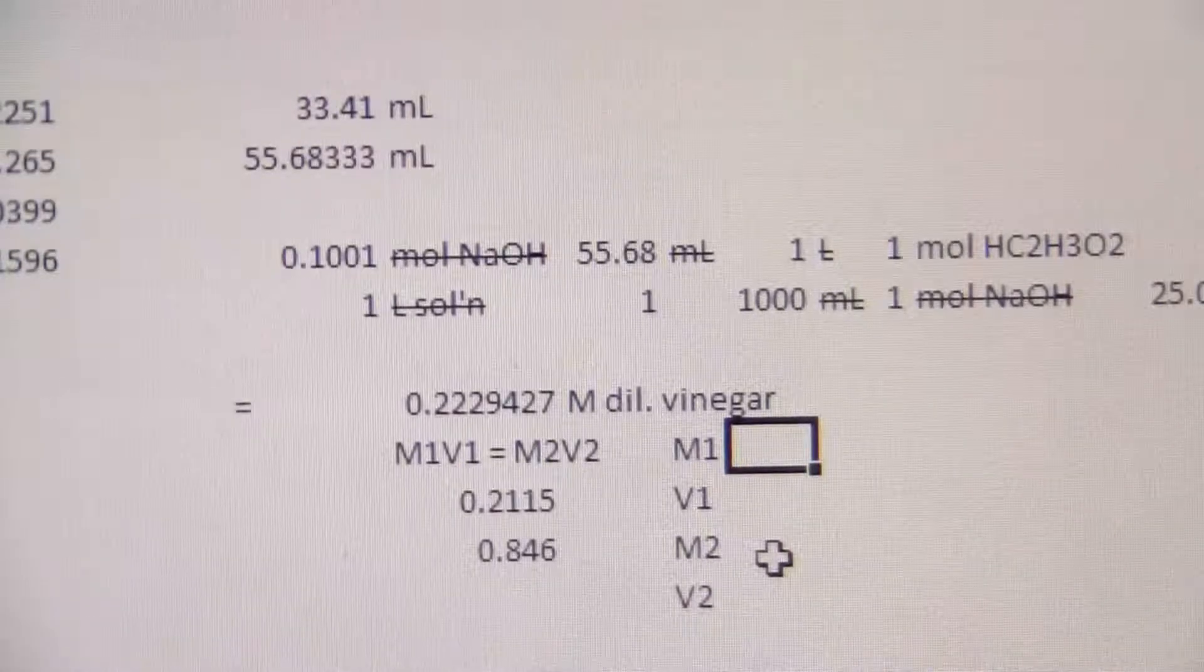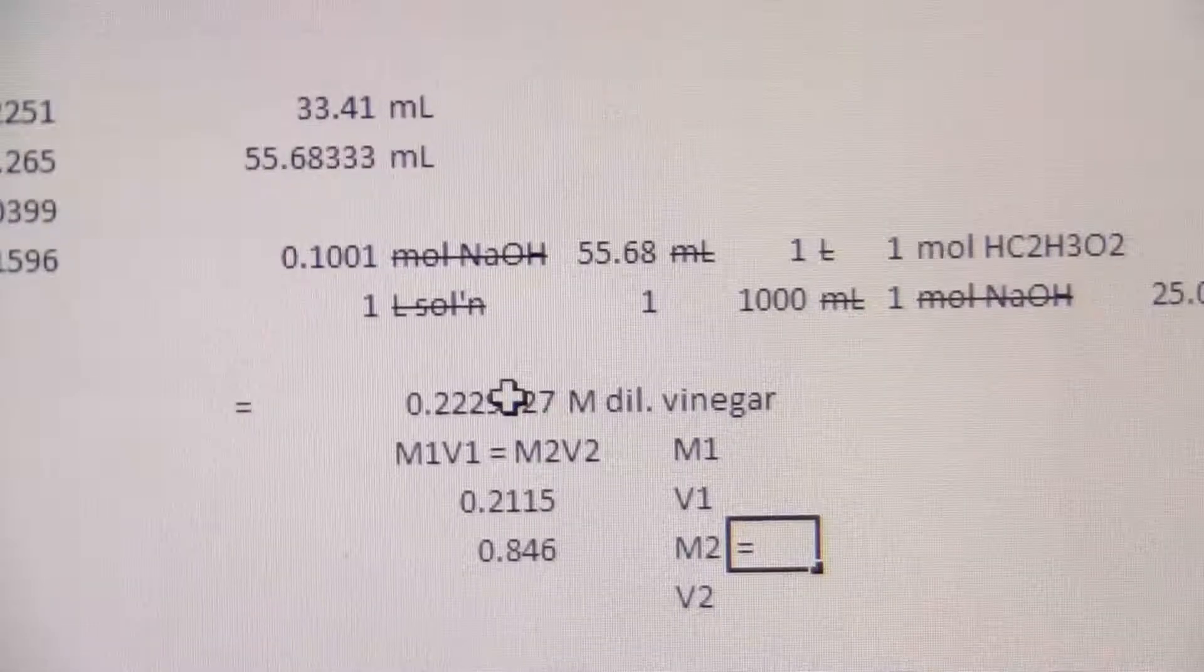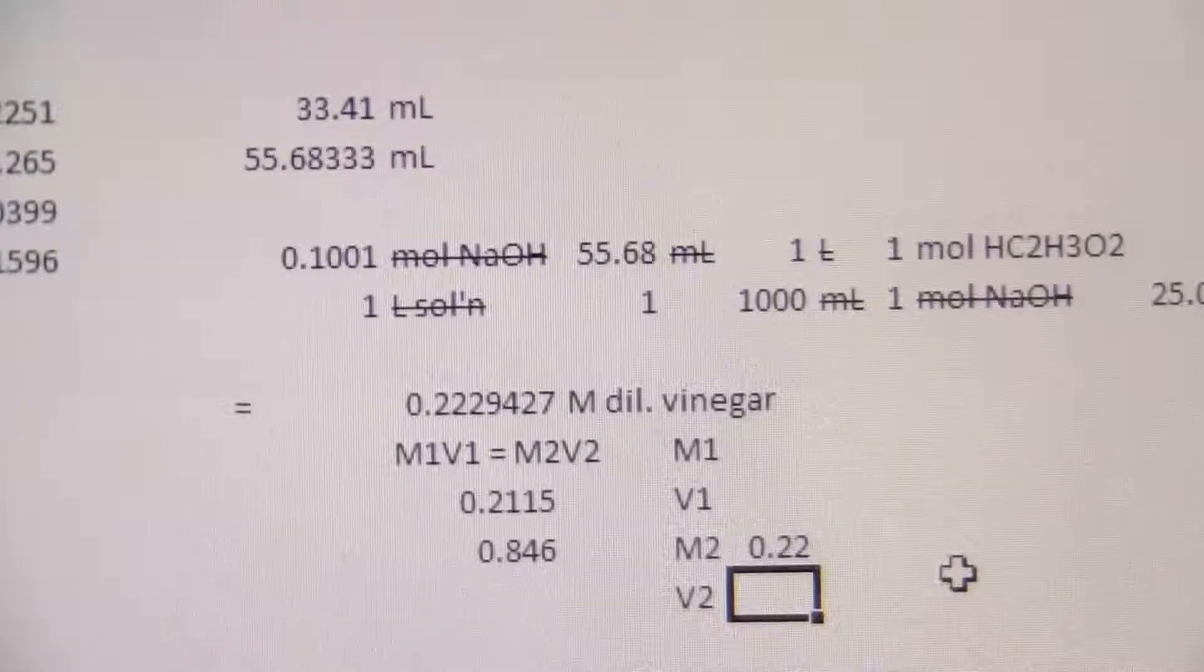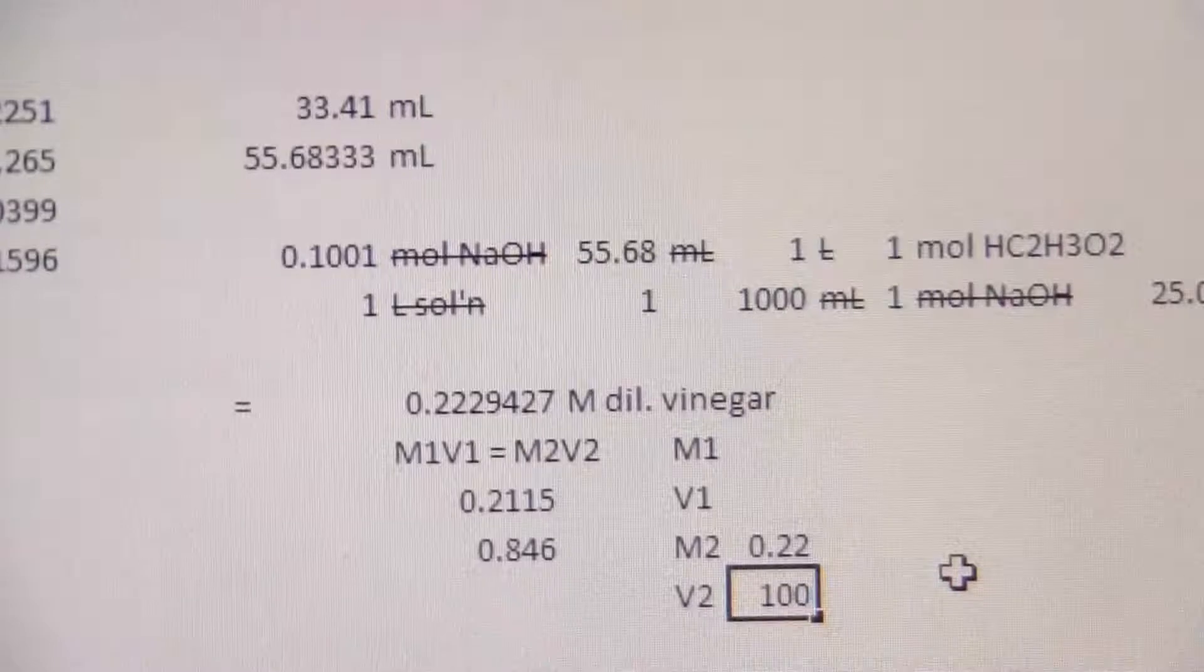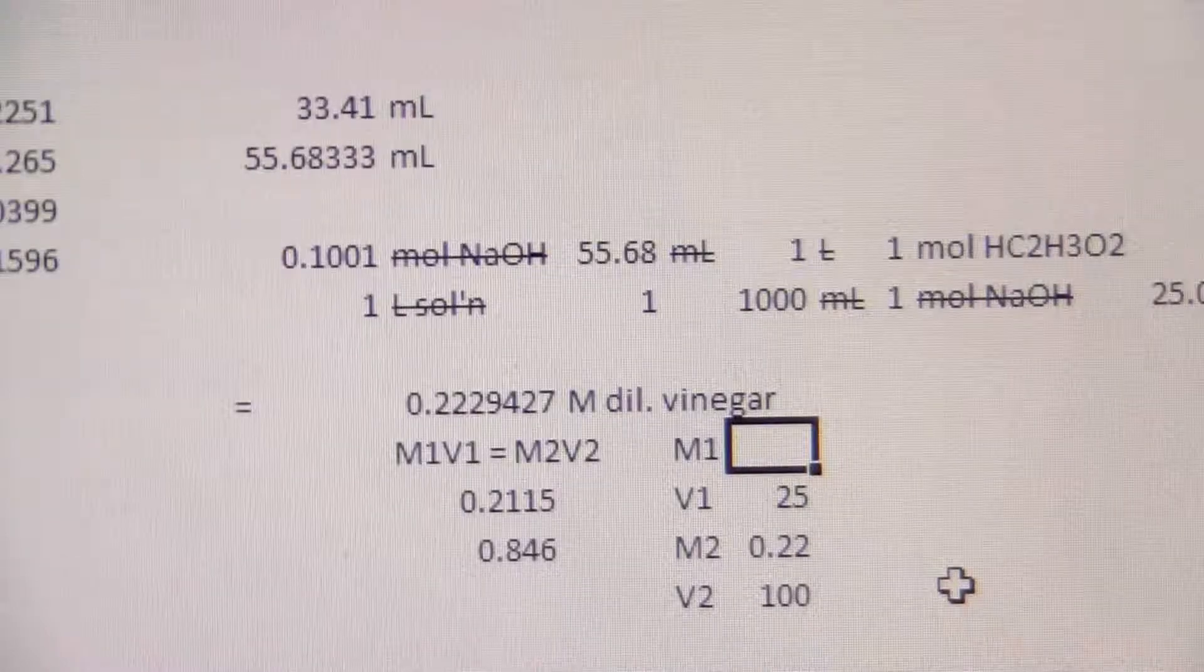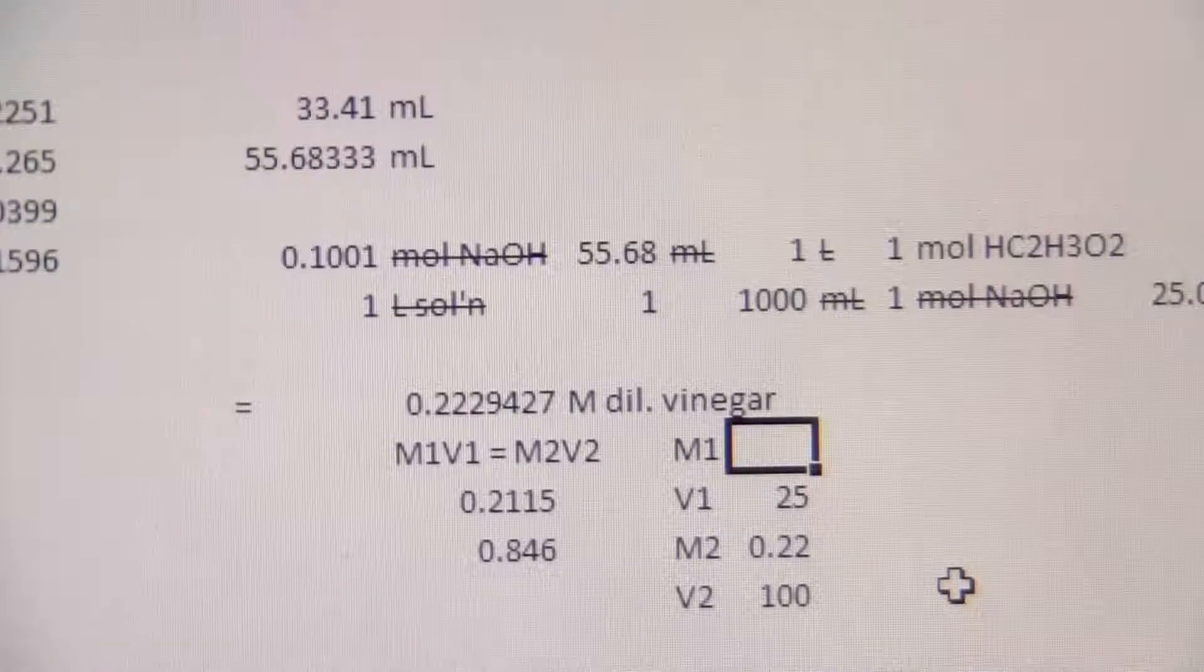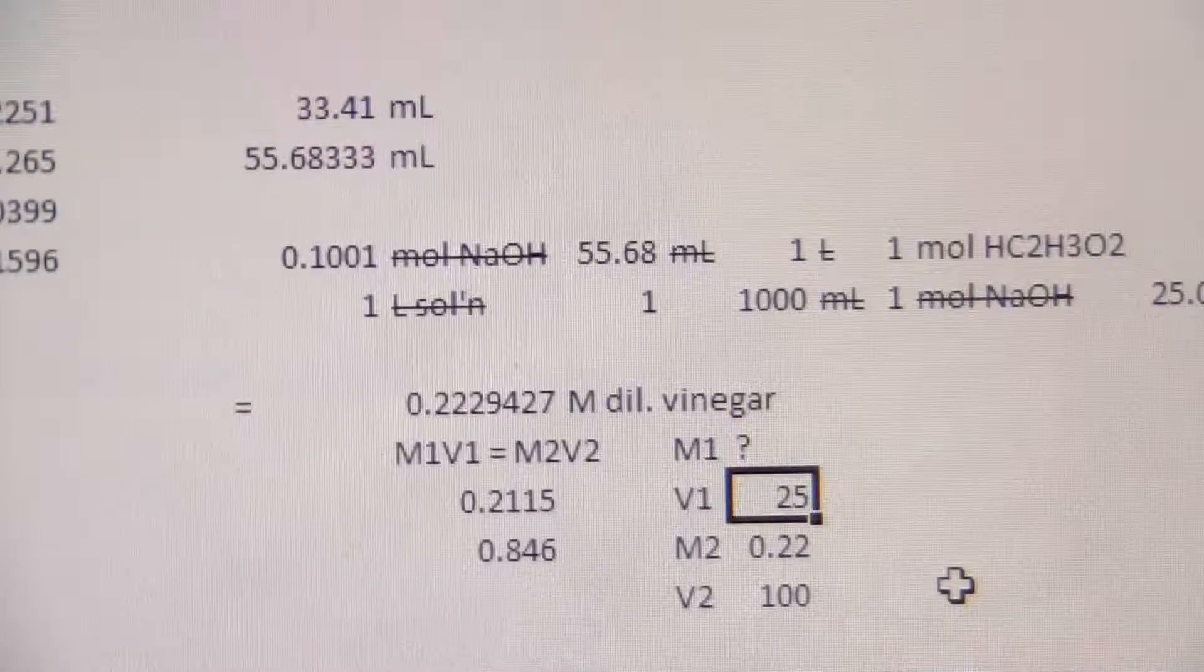So M2 is my diluted vinegar, which has this concentration. My volume 2 is what I diluted it to. That's going to be 100. And my initial volume is how much I took of the concentrated solution, which is the pure vinegar. And then this is what I don't know.